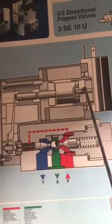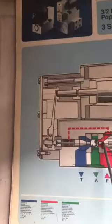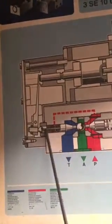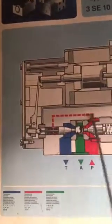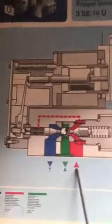This is the pictorial diagram for the three by two directional poppet valve and it is self-explanatory. Here is the coil, here is the spool, this is the trigger, and these are the poppet section and spring. This is also the poppet and the spring — so this is called a three by two directional poppet valve. This is the tank port, this is the A port, and this is the pressure port.